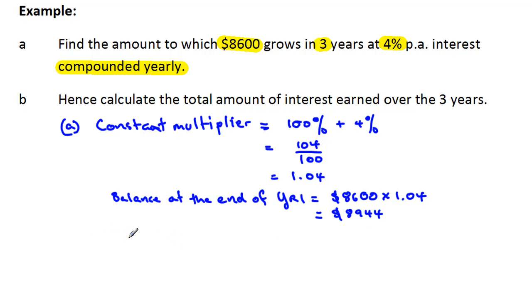And we just repeat this. So we could say the balance at the end of year two would be what we had here, $8,944.